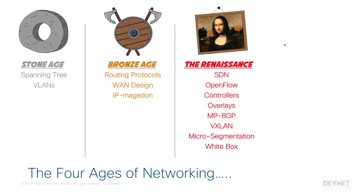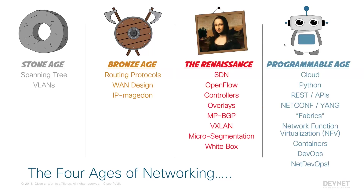The renaissance had all these ideas — some of them grew, some filtered out and became less important. That brings us to today, into the programmable age. In the programmable age, what we've got is coming out of the renaissance and realizing what ideas fit in and how we really need to evolve. Now in the programmable age, it's about cloud — Python is becoming a fundamental technology that network engineers need to know so they can consume new APIs like REST or new protocols like NETCONF and YANG. We're building fabrics, and now we're trying to figure out how to work with DevOps concepts. What surprises me is how quickly these last couple of stages went through — how quickly we moved from the bronze age to the renaissance to the programmable age.